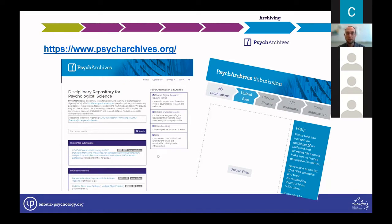With PsycArchives, ZPID tries to give researchers control over what they publish, for whom, and under which access and usage modalities. This makes it easier to adhere to open science standards while acknowledging legitimate researcher interests and ethical and legal requirements. After publishing your research material, only one step remains in the cycle: publication in a journal.